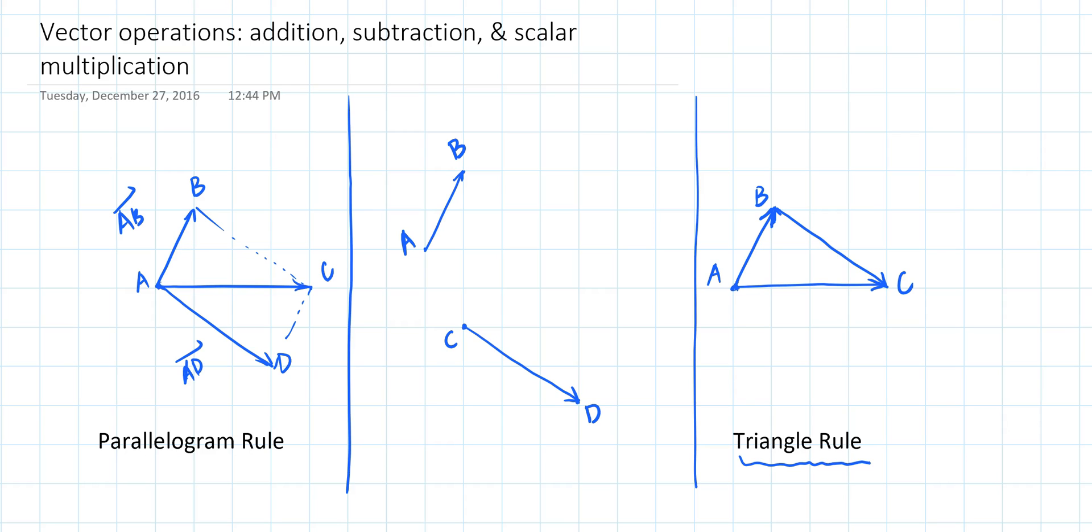In this case, you can just find equivalent vectors of one of these vectors, so then you can apply the parallelogram rule or the triangle rule.